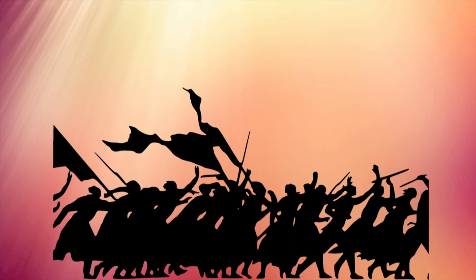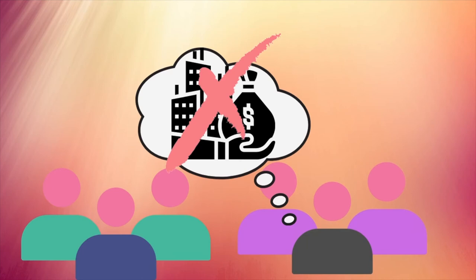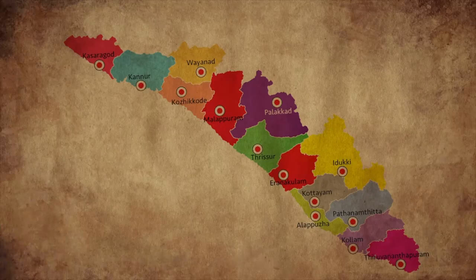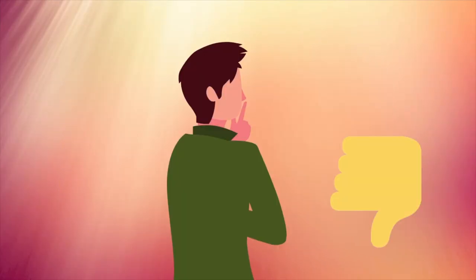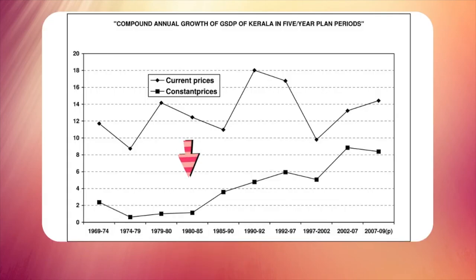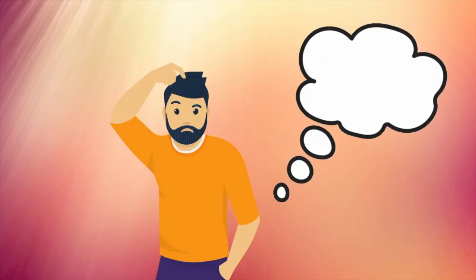Numerous other factors such as trade union militancy, frequent strikes, and the anti-capitalistic mindset among public have driven away many industries from Kerala. The GDP growth of Kerala was poor from 1960s to early 1980s. But after that, Kerala saw a sudden jump in its economic growth. The reason? Gulf boom.